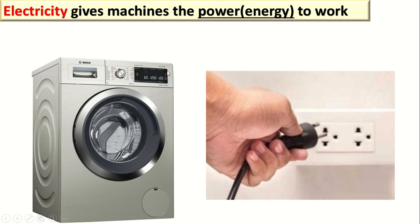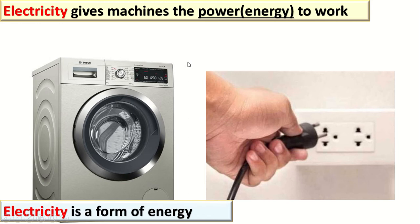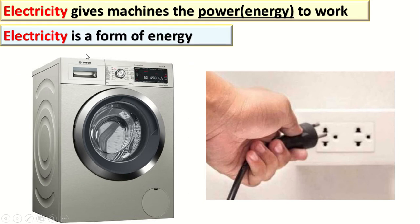Without the electricity, the machine can't work. The electricity gives the machine the power or the energy to work. The electricity is a form of energy — the electricity is an energy. So, what is the electricity? A form of energy.